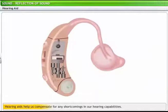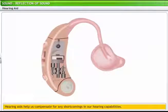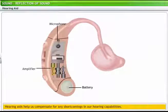Hearing aids help us compensate for any shortcomings in our hearing capabilities. So, how does a hearing aid work? A hearing aid is a battery-operated device that receives sound waves through a microphone. This microphone converts sound waves into electrical signals, which are amplified by an amplifier. The amplified signals are sent to the speaker of the hearing aid. The speaker converts them into sound waves and sends them into the ear at a volume that the ear can clearly hear.